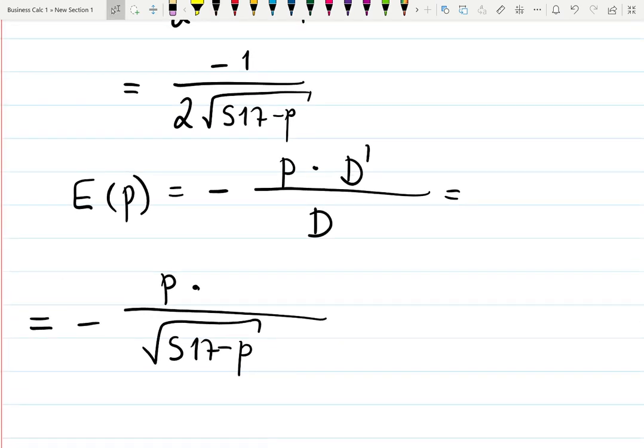I'll write this first because it's easy. P also is easy, don't touch that. Now copy the derivative. The derivative is a fraction, so we'll have a fraction in the numerator: -1 over 2√(517 - p). Put it in parentheses to make it more visual.